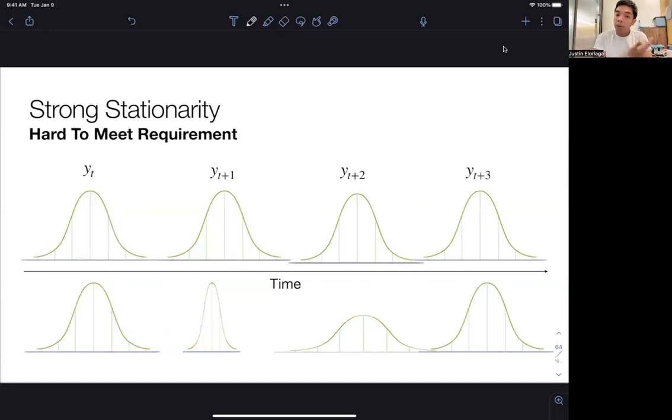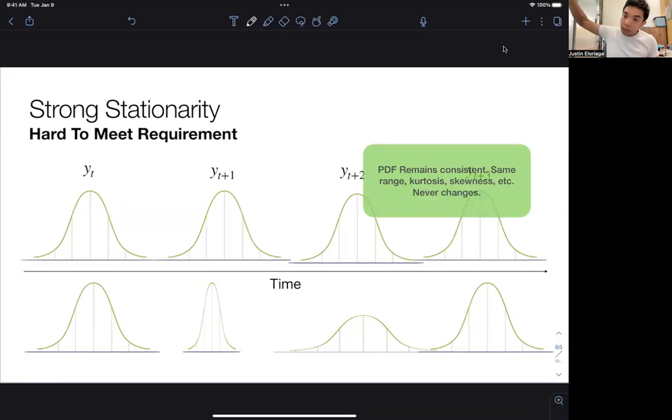So in period one, it looks like a normal distribution. In period two, it's more flat, more skewed to a certain point. In period three, it's quite broad. In period four, it's more like period one. So if you look at the row on top, the PDF remains consistent. It's the same range, same kurtosis, same skewness, et cetera. Never changes.